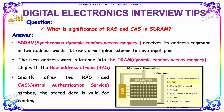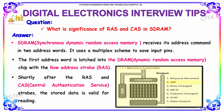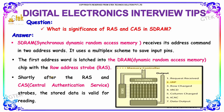The next question is: what is the significance of RAS and CAS in SDRAM — synchronous dynamic random access memory? The SDRAM receives its address command in two address words and uses a multiplex scheme to save input pins. The first address word is latched into the DRAM chip with a row address strobe (RAS). Shortly after the RAS and CAS strobes, the stored data is valid for reading.